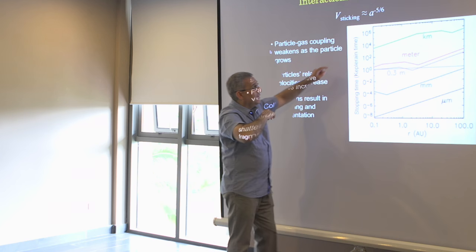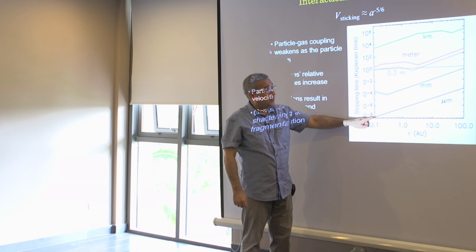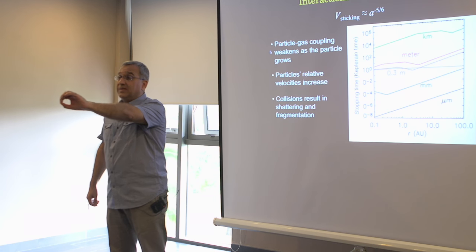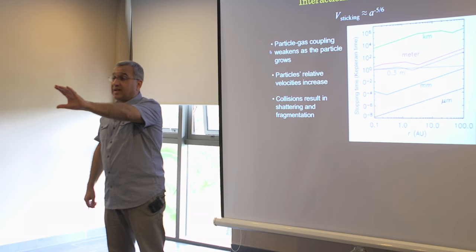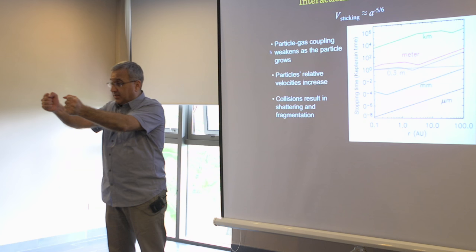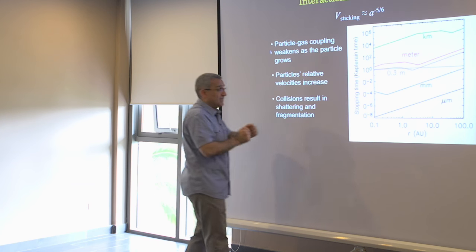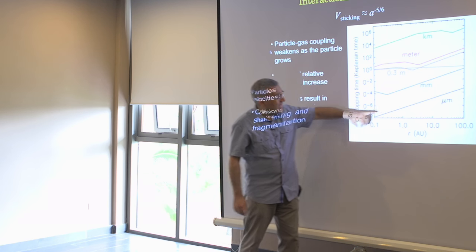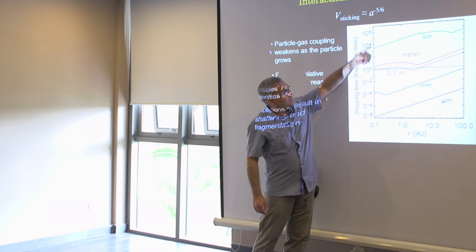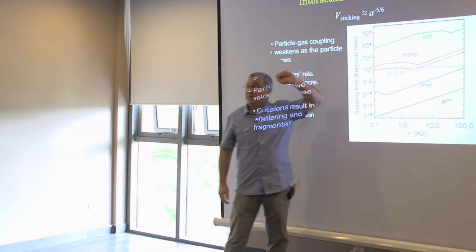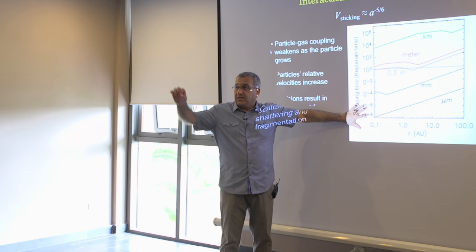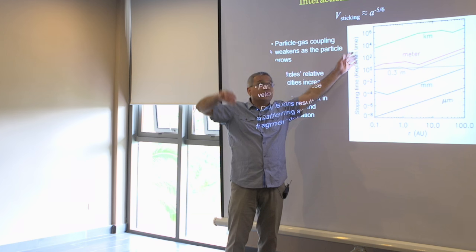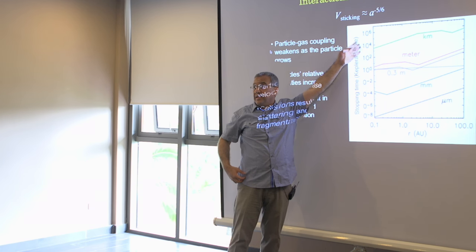If you put a dust particle in the gas and give it Keplerian velocity and release it, soon after that it loses its Keplerian motion and gets stuck with the gas, and starts moving with the gas. This tells you something interesting: as the size of the object increases, it shows more and more independence from the gas. Small objects are heavily coupled to the gas — if you give them a flick, they lose their independent motion. But if you take a kilometer-sized body and give it a push, it keeps going as though the gas doesn't exist.